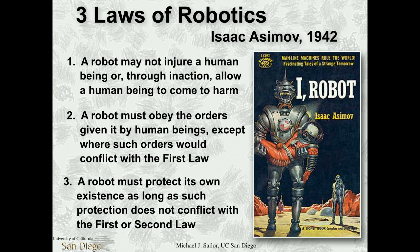Isaac Asimov's three laws of robotics: first, a robot can't do any harm to people; second, it has to obey the orders of people, except if an order would cause harm to another human — that first law was supreme; and third, given that it follows one and two, it must protect its own existence so it can keep doing what it's supposed to do.